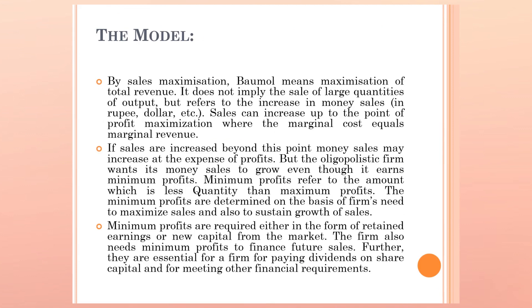The model. By sales maximization, Baumol means maximization of total revenue. It does not imply the sale of large quantities of output but refers to the increase in money sales, that may be in the form of rupee, dollar or any other currency. Sales can increase up to the point of profit maximization where marginal cost equals marginal revenue. If sales are increased beyond this point, money sales may increase at the expense of profits. But the oligopolistic firm wants its money sales to grow even though it earns minimum profits. Minimum profits refers to the amount which is less than maximum profits.